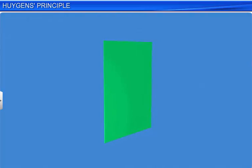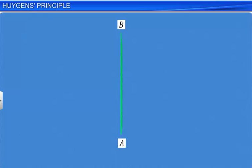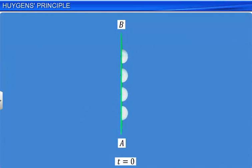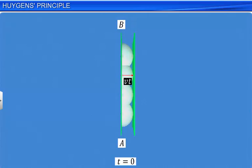Now let us use Huygens' principle to find the location and shape of a plane wave front at a later instant of time t. Let AB be a plane wave front at time t equal to zero. According to Huygens' principle, each point of AB acts as a source of secondary wavelets. The radii of these spheres will be Vt after t seconds. The plane touching these small spheres in the forward direction gives the shape and location of the new wave front after t seconds.